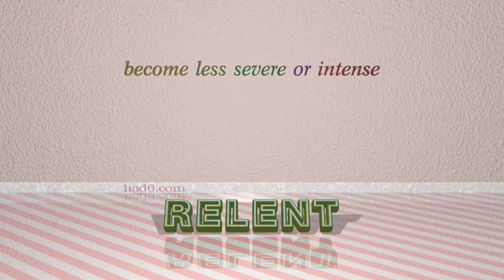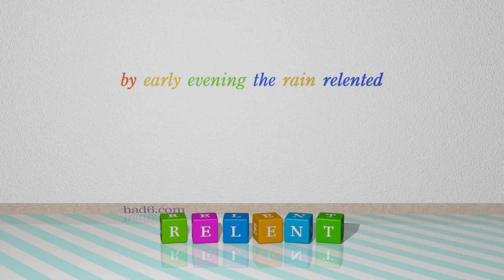Number 7: Relent. Which means become less severe or intense. For example: By early evening, the rain relented.